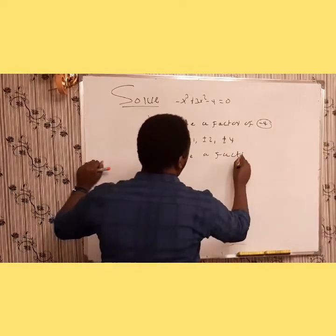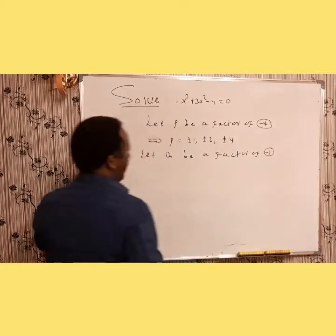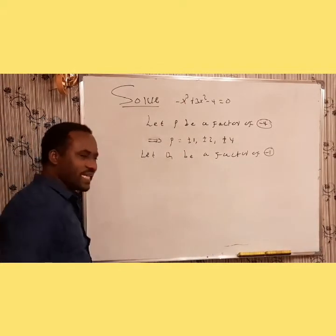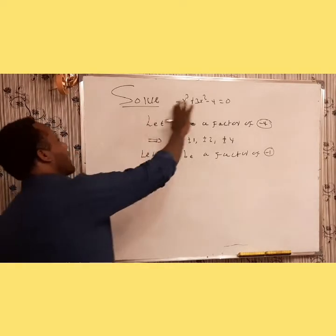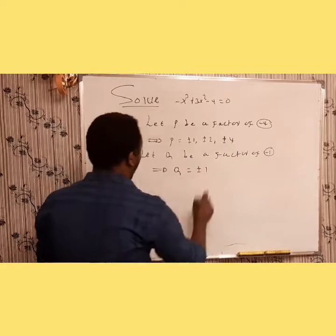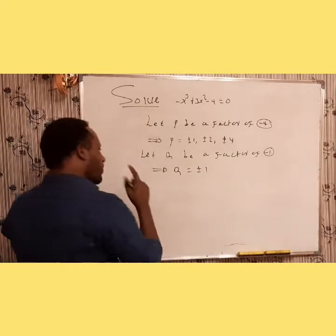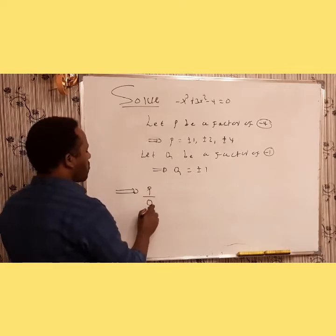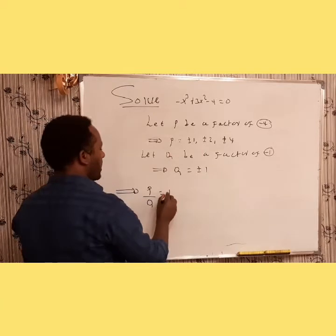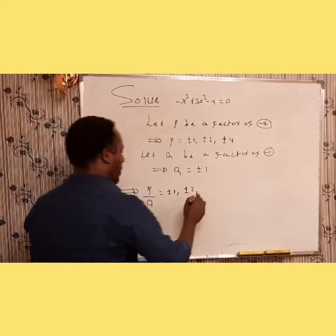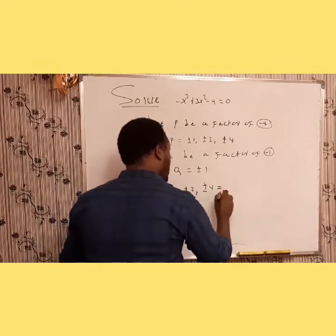Similarly, let q be a factor of the coefficient of the leading term. The leading term is -x³, so -1 is the coefficient of the leading term — it has the highest exponent in the polynomial. This implies that q is ±1. Now the possible rational zeros are given by p over q: that is ±1/±1, ±2/±1, and ±4/±1, giving us ±1, ±2, and ±4.